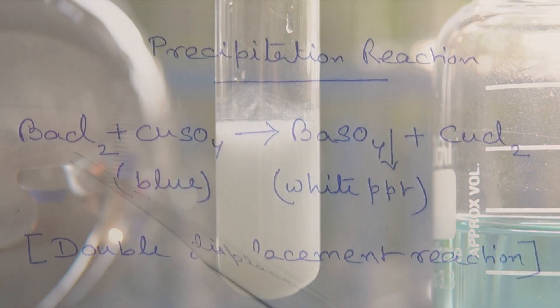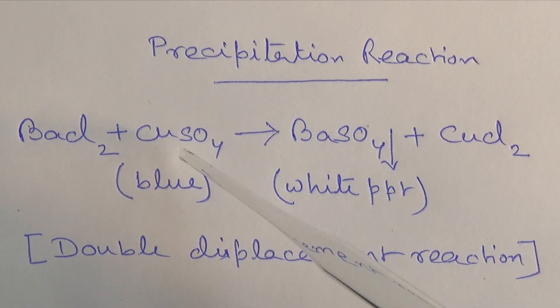So, in this reaction, barium chloride react with blue color copper sulfate solution, produce an insoluble white PPT of barium sulfate along with copper chloride.